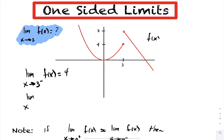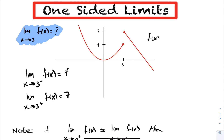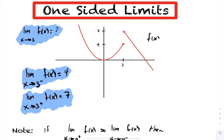If I take the limit as I approach 3 with a superscript of plus, that signifies I'm approaching 3 from the right-hand side. As I approach 3 from the right-hand side, my function f(x) is approaching 7. So now we have new notation: the limit from the left is illustrated by the 3 superscript minus sign, and with the superscript 3 plus, we have the limit from the right-hand side.